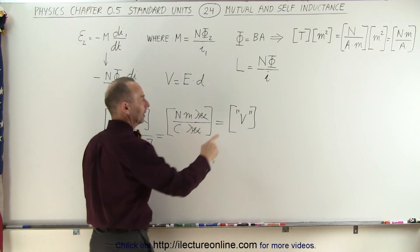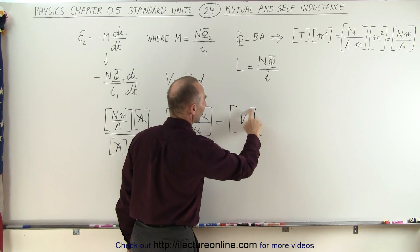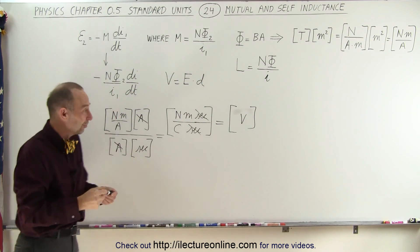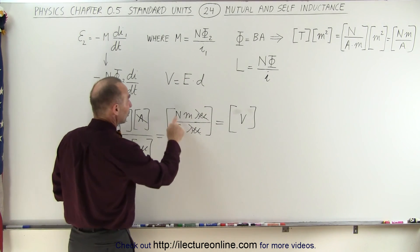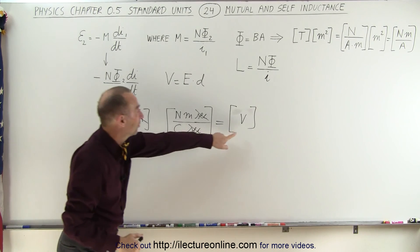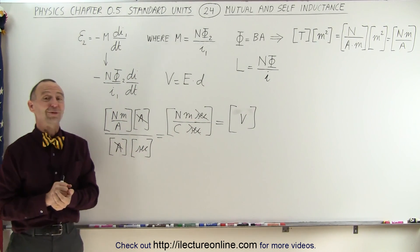Actually, since the units for voltage is the same as the symbol for volts, we can simply get rid of the quotation marks because that's actually the units for voltage. Volts, or volt, is equal to a newton meter per coulomb. So we're good. That means that this is indeed the units of the induced voltage. And that's what we're trying to show.